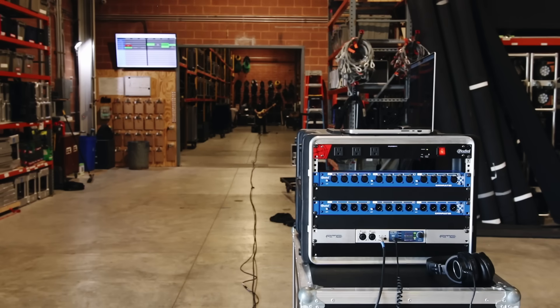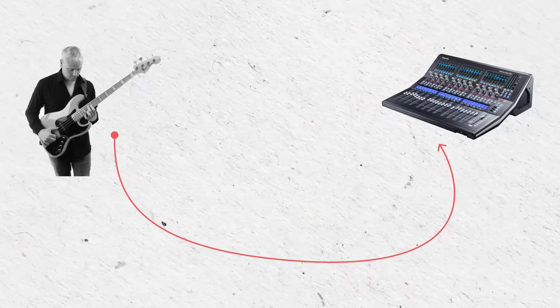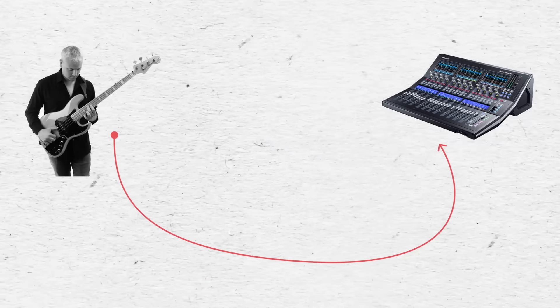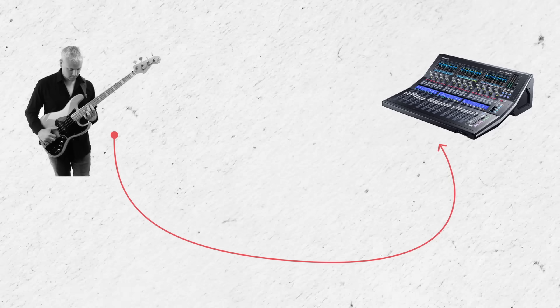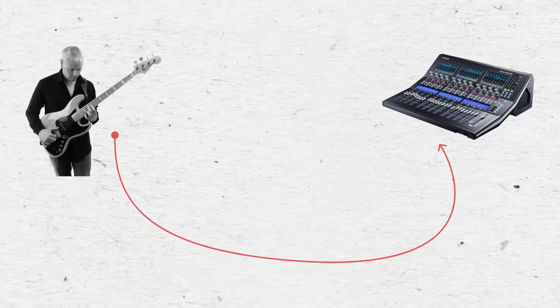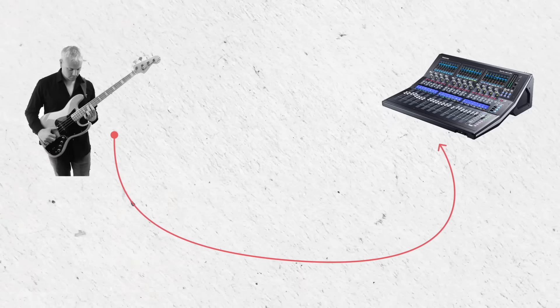First, we hear that the tone becomes increasingly darker with every foot of cable we add. And second, we hear an increasing amount of noise starting to infiltrate the signal path. Imagine a scenario where the bassist is on stage and you need to run the signal from the bass to the mixing console at front of house — at that distance, the tone and noise would be unbearable.